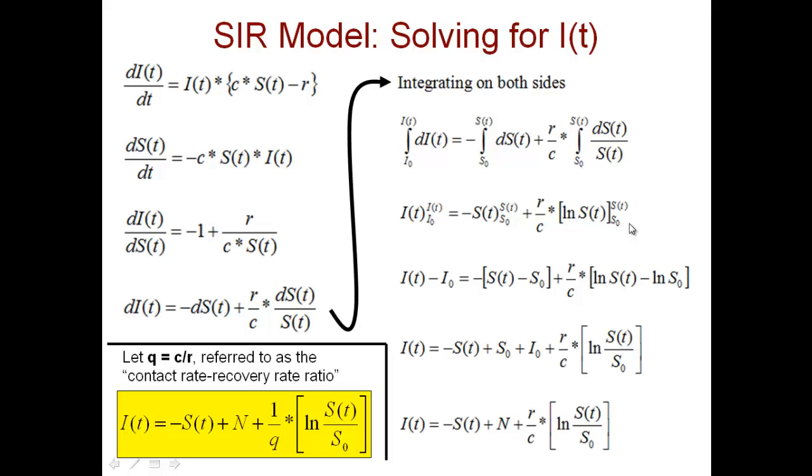So now we apply the upper limit and lower limit on both sides of this equation. I(t) minus I₀ equals minus S(t) minus S₀ plus r over c times log of S(t) minus log of S₀.